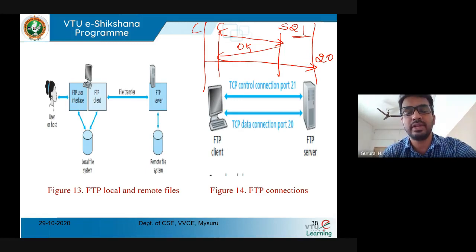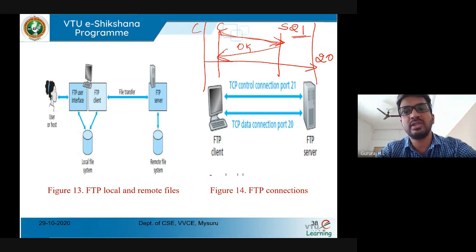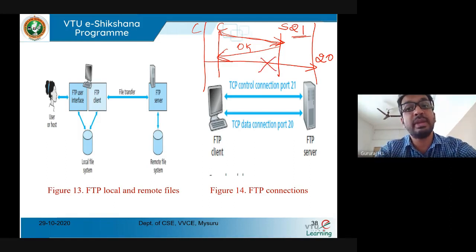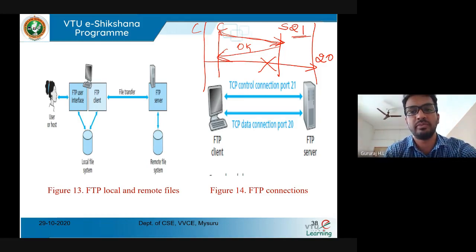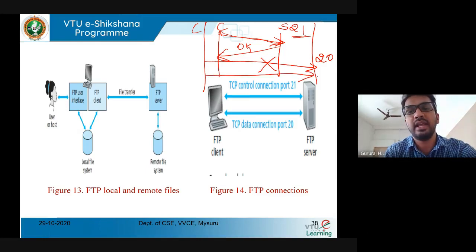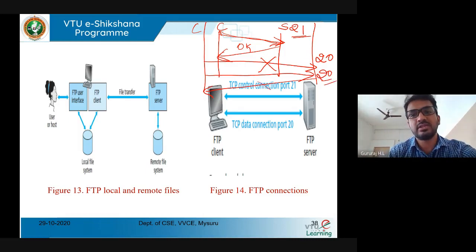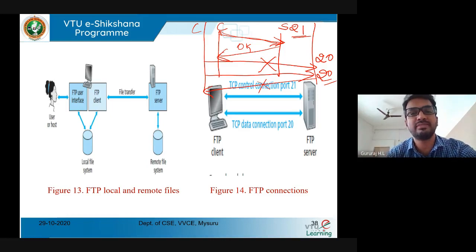Once after sending the data and fetching all the data, the control connection is used to close the connection. Unlike HTTP protocol, FTP always stores state information. Once the data has been sent, the data connection will be closed, but the control connection remains open until the complete session is closed. By keeping the control connection open, the client can send requests for additional files and fetch them using a separate data connection on port 20.